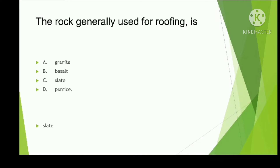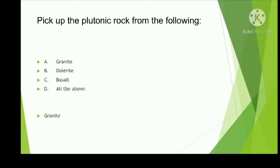The rock generally used for roofing is granite, basalt, slate, or pumice? Slate, because slate is a good roofing material. Pick up the plutonic rock from the following: granite, dolerite, basalt, or all of the above? Granite is a type of igneous rock present at deep depth, known as plutonic or intrusive rock.